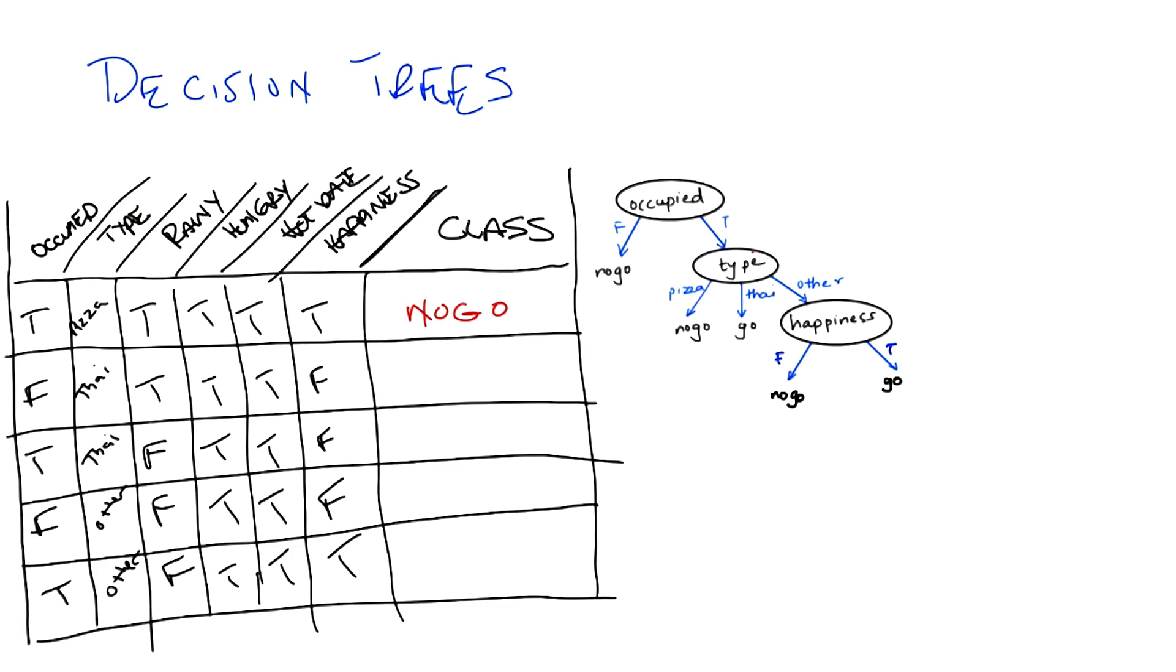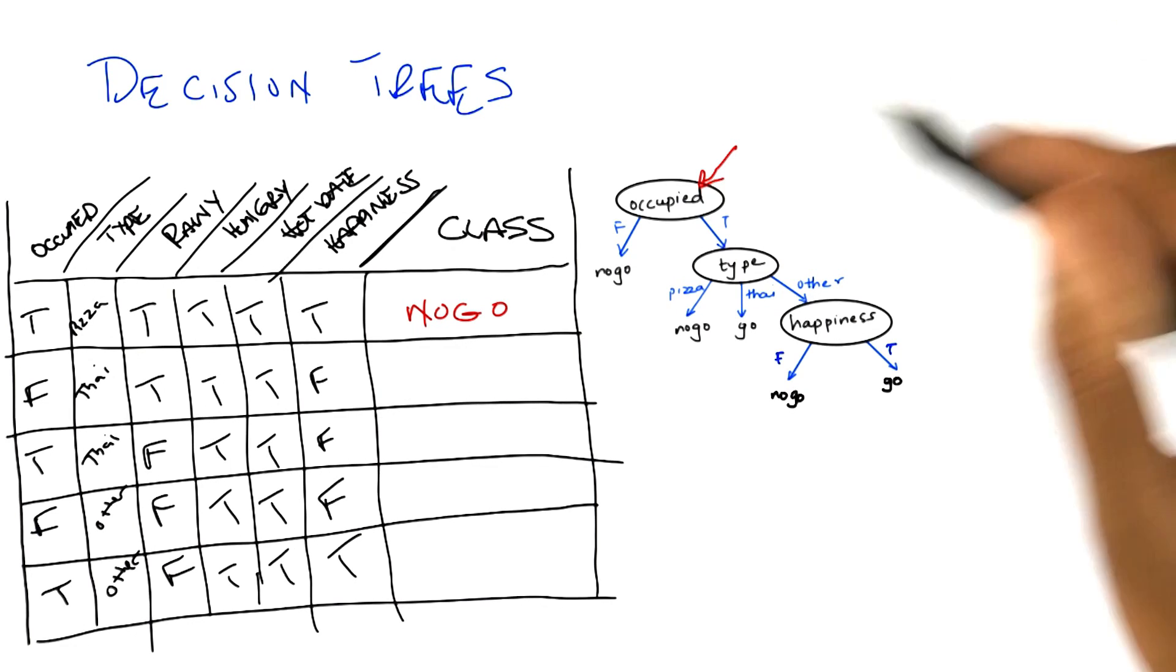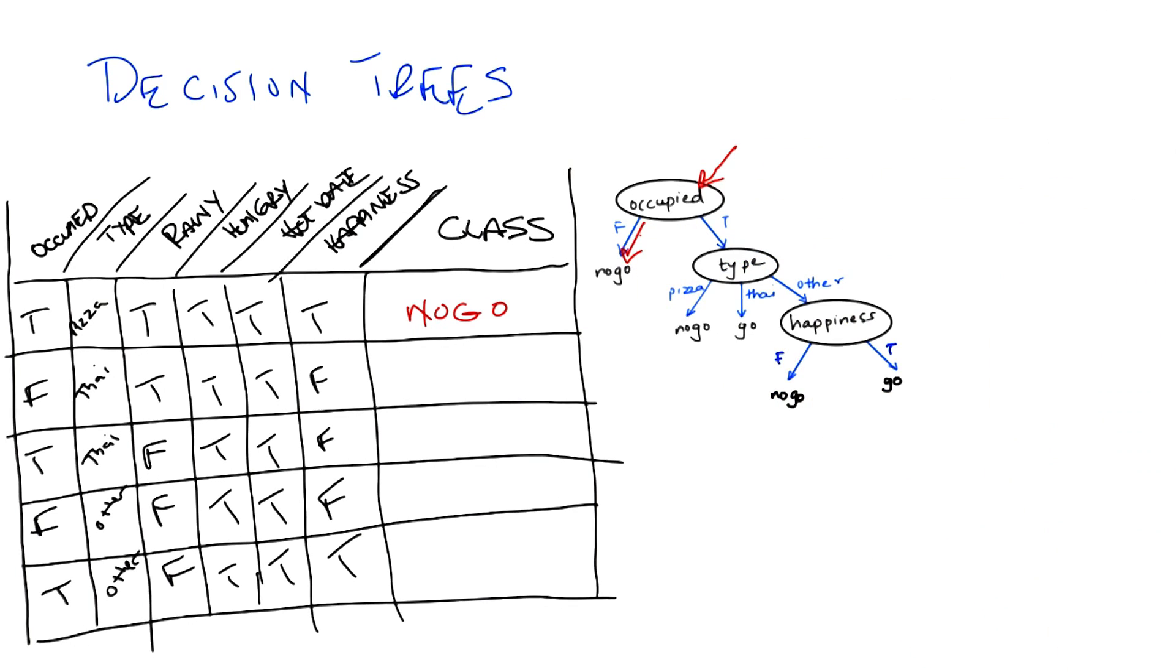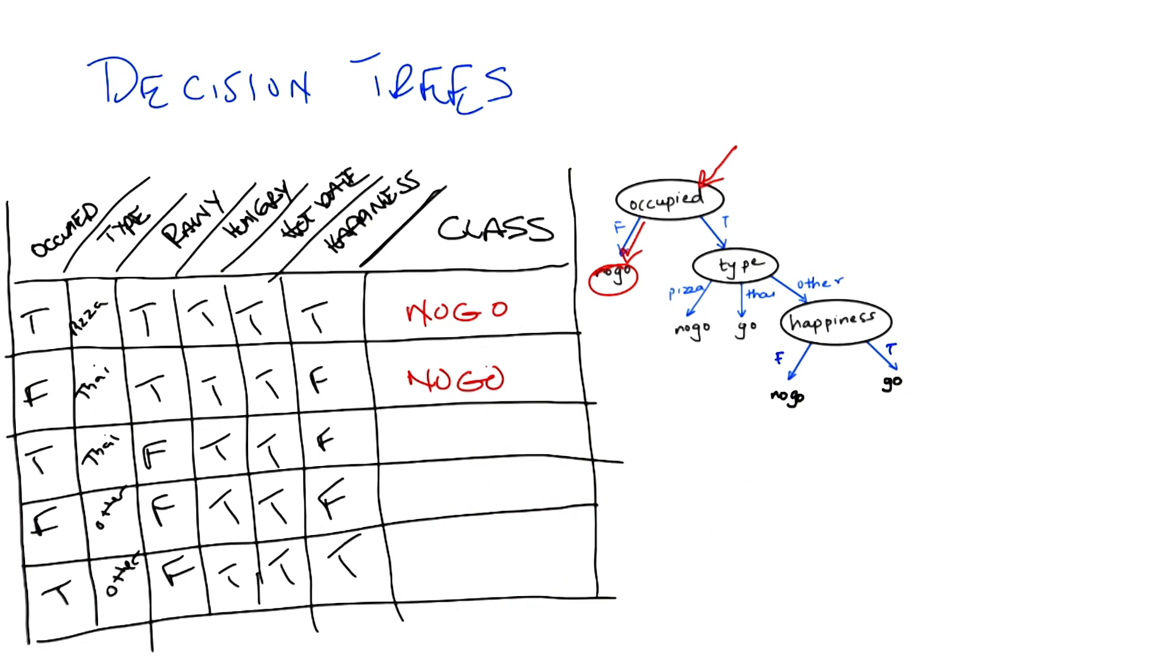So let me see if I get this straight. The second instance, you say that we need to start at the top of the tree where it says occupied. And so now I look at the instance, and the instance says that it's false for occupied. So we go down that left branch and we hit no go. Wait, but now I haven't looked at any of the other nodes. And you don't have to look at any of the other nodes, because it turns out that if it's not occupied, you just don't go into a restaurant. So you're the type of person who doesn't like to be the only person in a restaurant. Got it. So that's a no go.